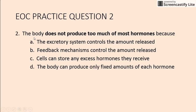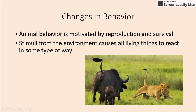Next question: the body does not produce too much of hormones because... The answer choices are: the excretory system controls the amount released; feedback mechanisms control the amount released; cells can store any excess hormones they receive; or the body can produce only fixed amounts of each hormone. The only thing involved in preventing us from producing too much of something is feedback mechanisms — our keyword — which helps control the amount released.